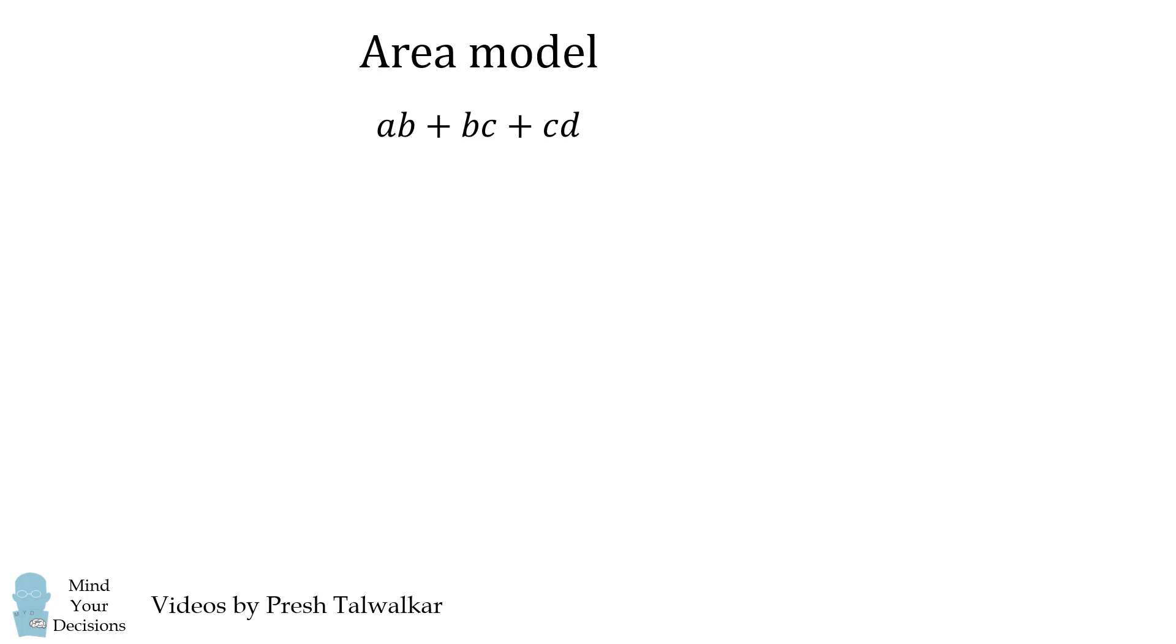We'll construct rectangles whose areas are each of these terms. Let's first construct a rectangle whose area is AB. We have one length of A and a width of B. This rectangle will have an area of AB.